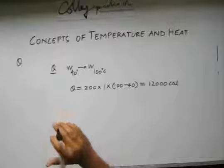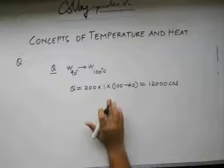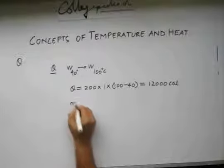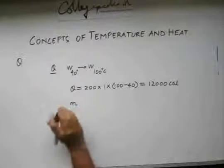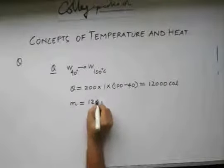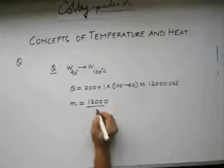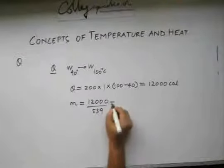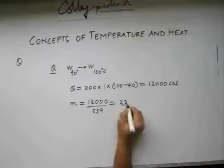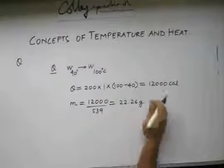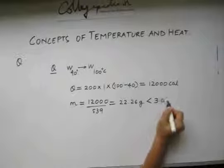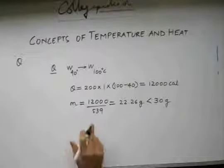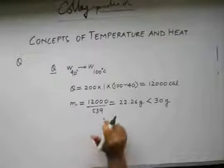This heat is going to come from the steam we are injecting into the system. So what is the mass of steam required for this conversion? The mass of steam required to release this amount of heat is 12,000 divided by the latent heat of vaporization, which is 539 calories per gram. This gives us 22.26 grams. Note that this quantity is less than 30 grams. Therefore, only 22.26 grams of steam will release its latent heat of vaporization into the water, converting it to water at 100 degree Celsius.